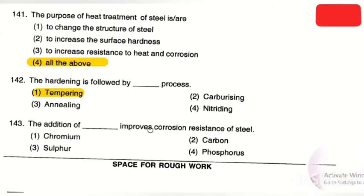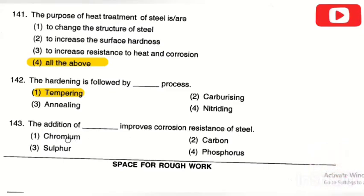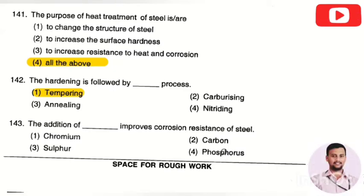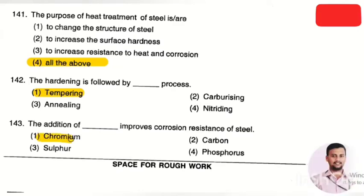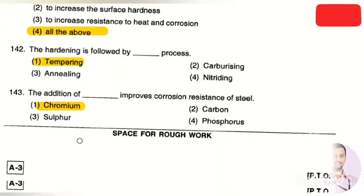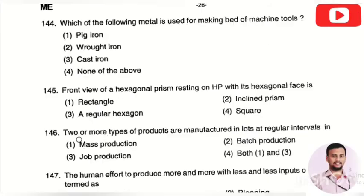The next question: the addition of which element improves the corrosion resistance in steel — option 1: chromium, option 2: carbon, option 3: sulfur, option 4: phosphorus. The right answer is option 1, chromium. By adding chromium into steel, its corrosion resistance property is improved.